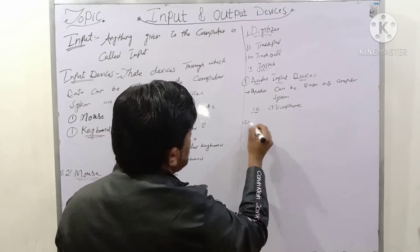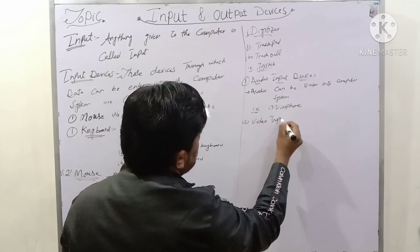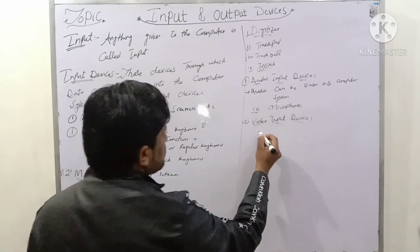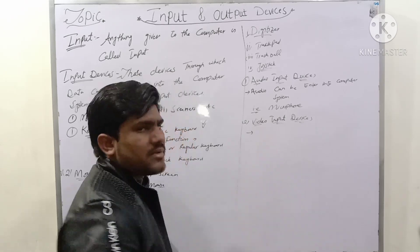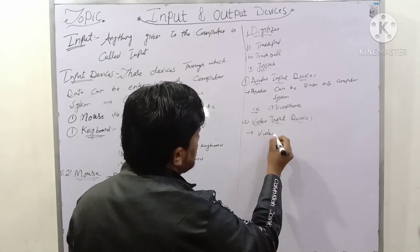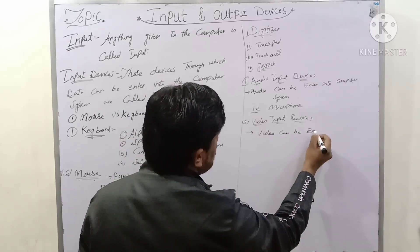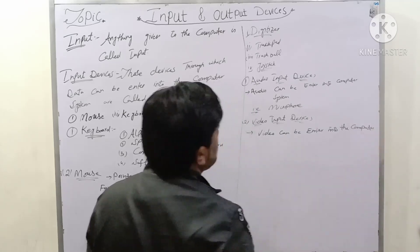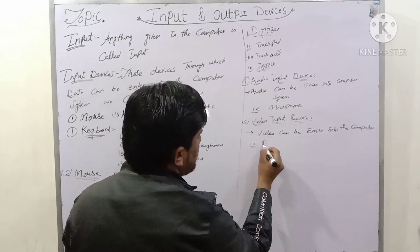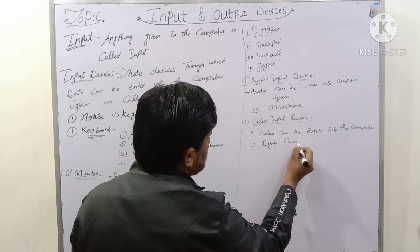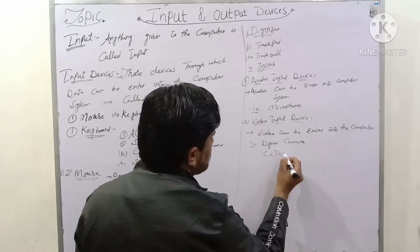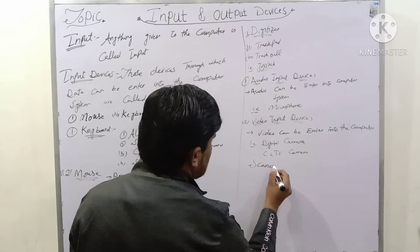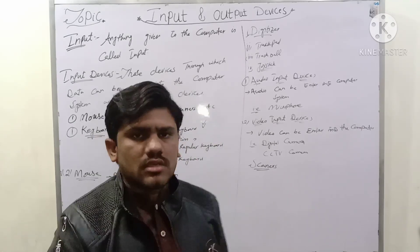Video input devices are those devices through which video can be entered into the computer system. For example, digital cameras and CCTV cameras are video input devices.